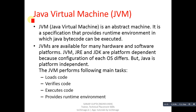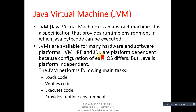The next topic is the virtual machine, known as the Java Virtual Machine, or JVM. JVM is an abstract machine — it is a specification that provides a runtime environment in which Java bytecode can be executed. JVM is responsible for the execution of Java bytecode and is available for many hardware and software platforms. JVM (Java Virtual Machine), JRE (Java Runtime Environment), and JDK (Java Development Toolkit) are platform dependent.